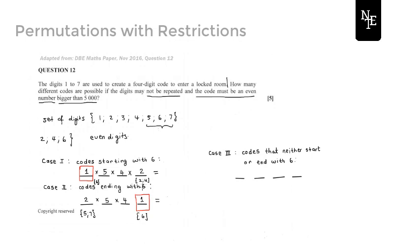Now let's go into the last case, where we want to avoid the repetition altogether — we don't want a 6 in the first position or in the last position in any way. So if we don't want to see a 6 in the first position, then we can only use the 5 and the 7, making us have 2 choices. For the last position, if we don't want to see a 6 there as well, then we only have the 2 and the 4 to choose from, which gives us 2 choices. At this point you're going to use either 5 or 7 for the first position, and same thing for the last position. You've now used up 2 of your digits, leaving you with 5 and then 4 digits to choose from in your middle positions.